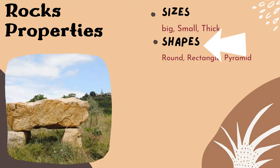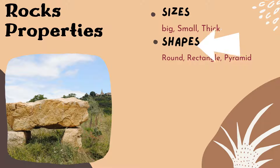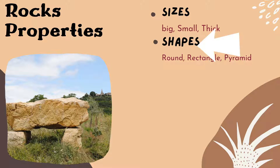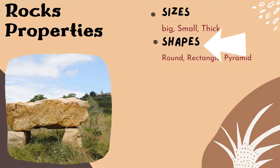Number two, shapes. The varying shapes of rocks are caused by the way rocks are formed. So we can find different shapes of rocks — round, rectangle, and so many other shapes.